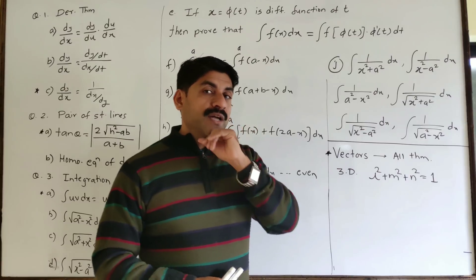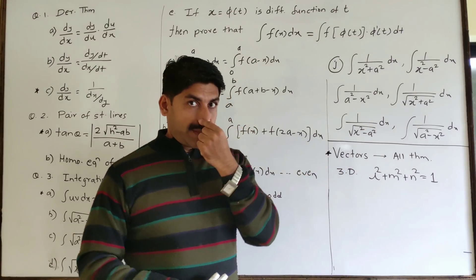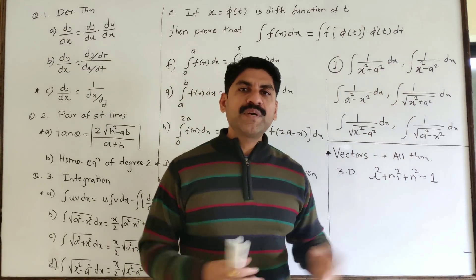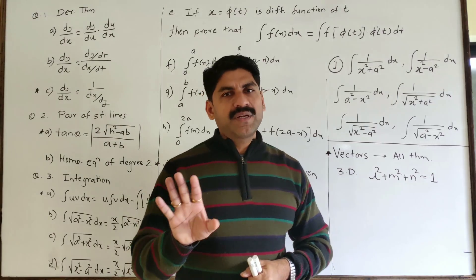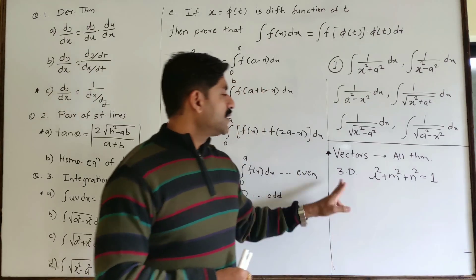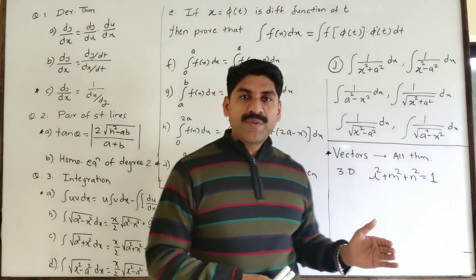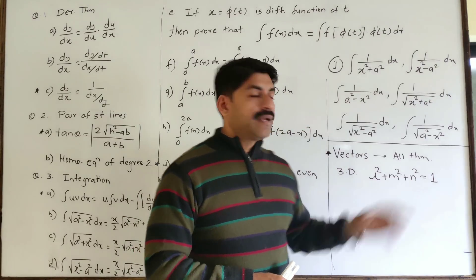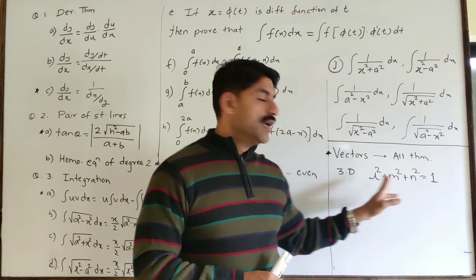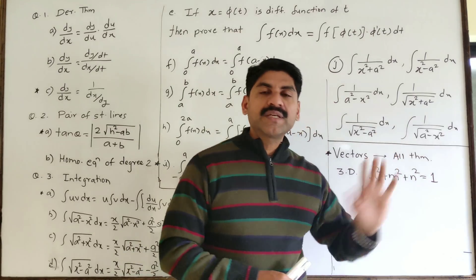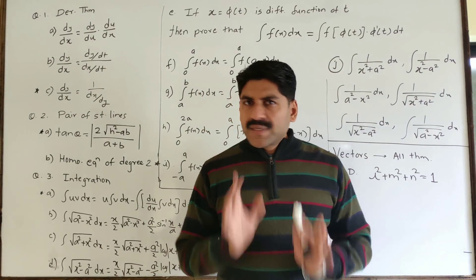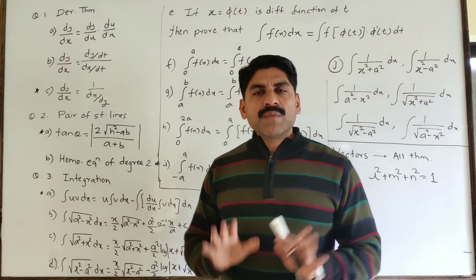The next topic is vectors. There is a theorem for the whole vector. I have a separate video, but I will explain it here. For 3D lines, we have direction cosines L, M, N — cos alpha, cos beta, cos gamma. This is a good example and the theorem is perfect. There are 15 marks in this section.